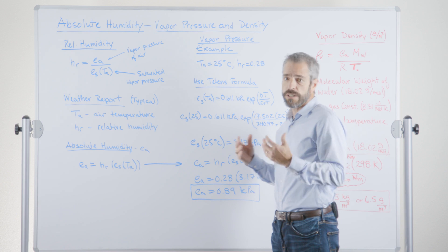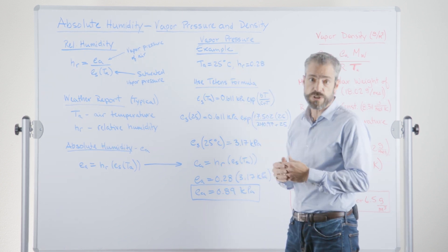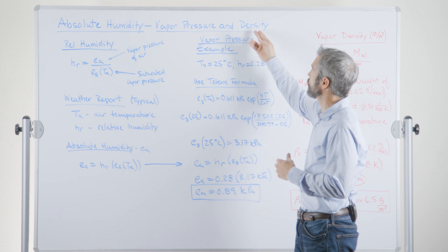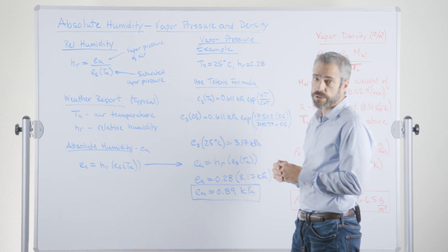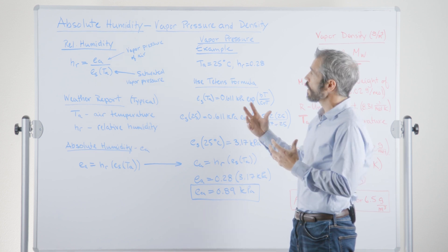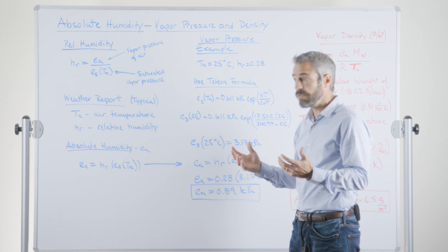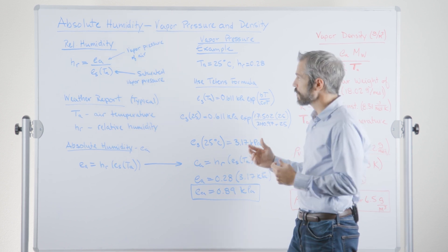So absolute humidity can be either talked about in terms of vapor pressure, which I'm most used to, or some people talk about it in terms of vapor density. But whatever we use, we start usually by calculating this from a relative humidity value and a knowledge of air temperature.